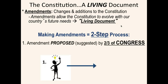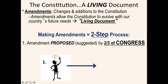The amendment-making process is a very short two-step process. In order to propose an amendment, two-thirds of both chambers of Congress — the House and the Senate — must agree. This is just to propose. A proposal is a suggestion, just like in this picture here where the man is proposing something — he has an idea, the light bulb goes off, he proposes it.